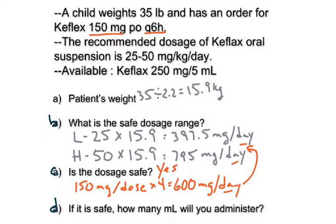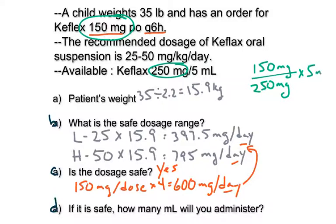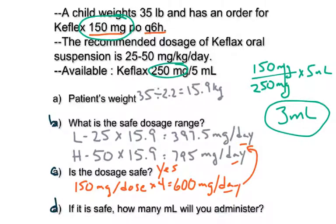Since it's safe, do the dosage problem. What's ordered is 150 milligrams; what's available is 250 milligrams per 5 mLs. So 150 divided by 250 times 5 equals 3 mLs. That's the final answer. That's safe dose range — I hope that helped. If anybody needs anything, just let me know. Bye.